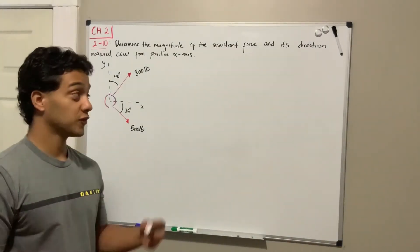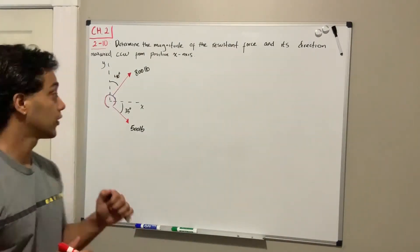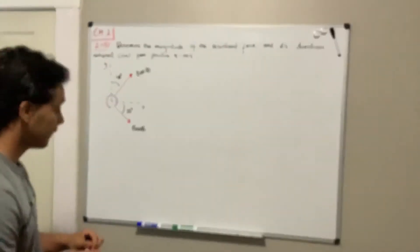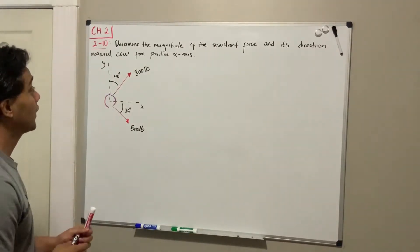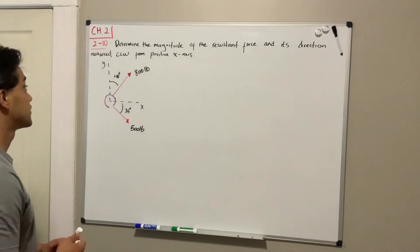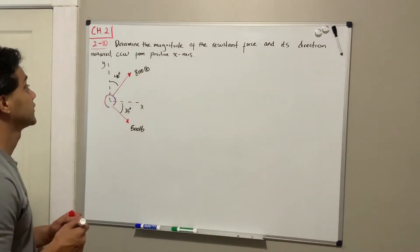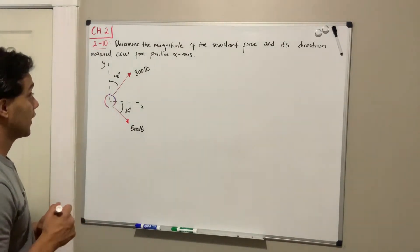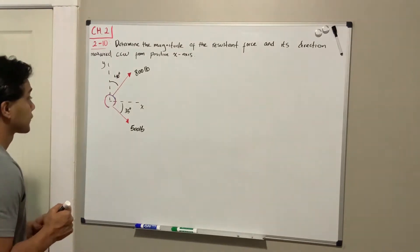Welcome back everyone to learning by teaching. We're in statics in chapter 2, we're gonna do problem 2.10. It says determine the magnitude of the resultant force and its direction measured counterclockwise from the positive x-axis.